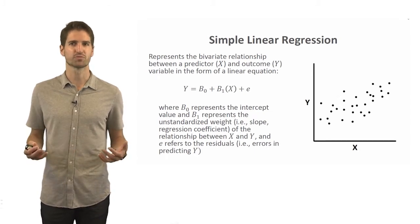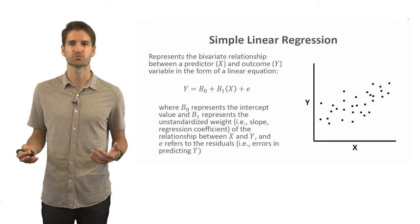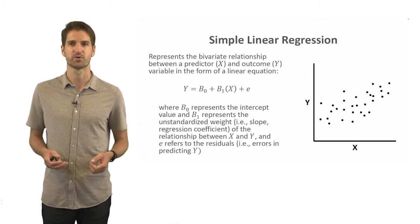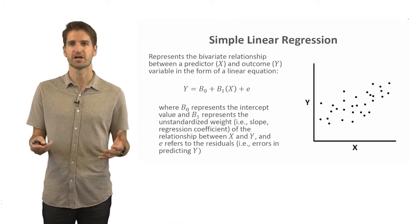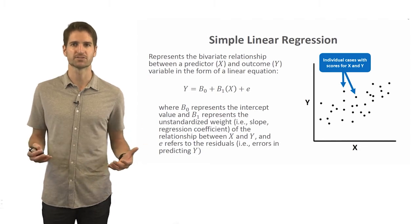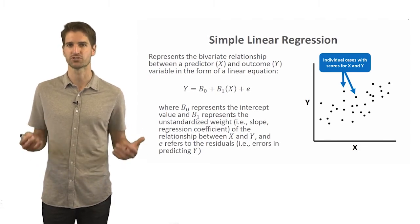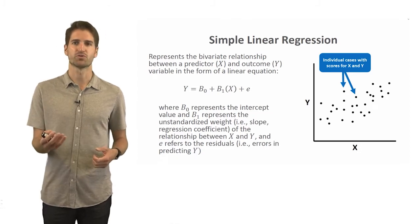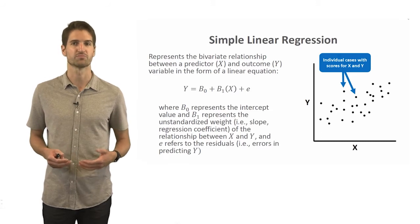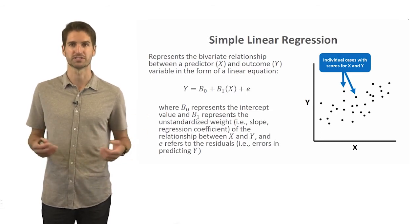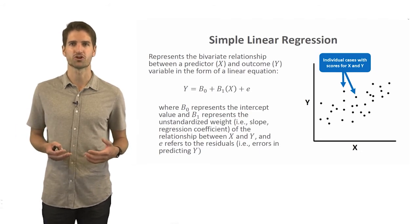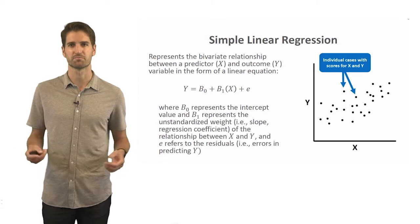Looking at this scatter plot, we can see variable x and variable y, which is our outcome variable. If you visualize this scatter plot, you can see that these different dots represent individual unique cases, where a case might be employee scores. Each circle represents an employee score on the x variable and on the y variable, where x refers to the predictor variable and y as the outcome variable.